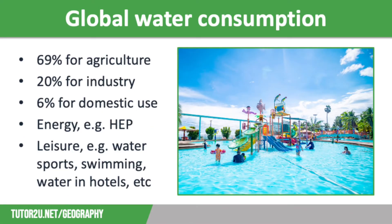So what do we actually need water for? About 69% is used in agriculture for crop irrigation and drinking water for livestock. About 20% is used for industry, for processing and manufacturing, but also as an ingredient in many food and drink products. About 6% is domestic use, which is in the home, for things like drinking and cooking, bathing and showering, flushing toilets and using things like washing machines and dishwashers. We also have some water being used for energy use, for example generating hydroelectric power and for cooling in power stations.